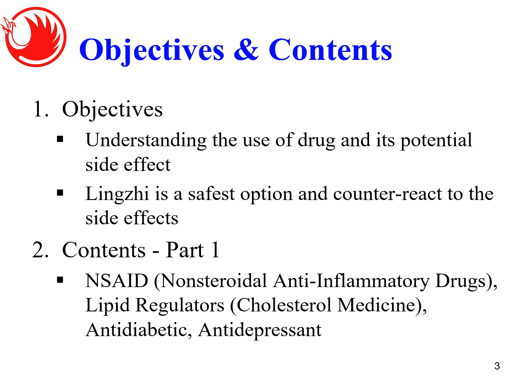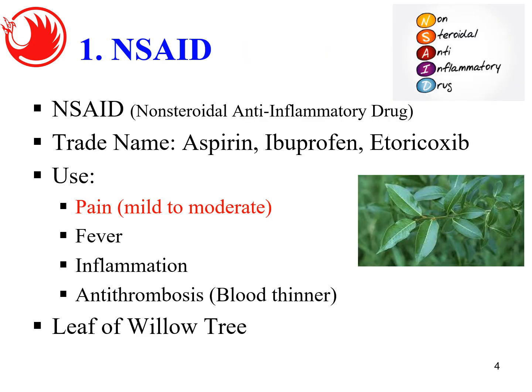Starting with NSAID — non-steroidal anti-inflammatory drug. As the name implies, the drug is used to reduce inflammation. The most powerful drug that can reduce inflammation is actually steroid, but steroid has the most side effects, including wound healing issues and affecting our metabolic system. Drugs classified under NSAID include aspirin, ibuprofen, and etoricoxib, whose trade name is Arcoxia. This drug is primarily used to relieve pain and reduce inflammation, and also to reduce fever, with a blood-thinning effect. In fact, aspirin is actually derived from the leaf of the willow tree.